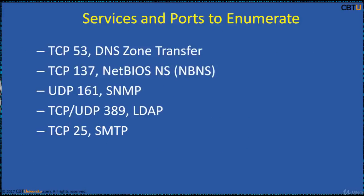Generally, the standard services and ports to enumerate are TCP-53 for DNS zone transfer, TCP-137 for NetBIOS name service, UDP-161 for Simple Network Management Protocol (SNMP), TCP-UDP-389 for LDAP (Lightweight Directory Access Protocol), and TCP-25 for SMTP (Simple Mail Transfer Protocol).